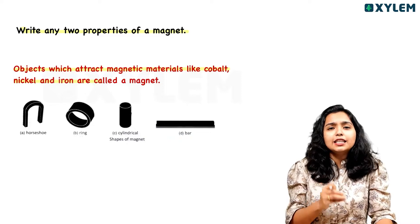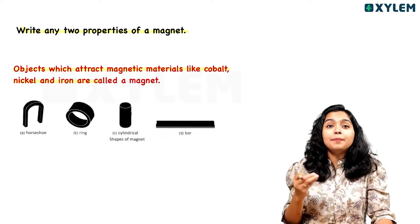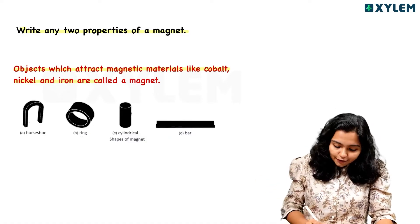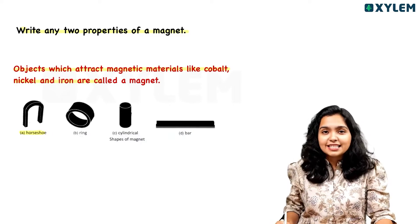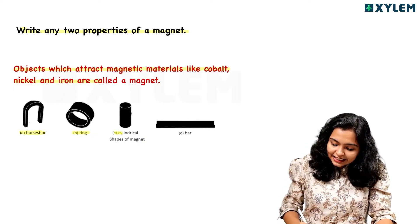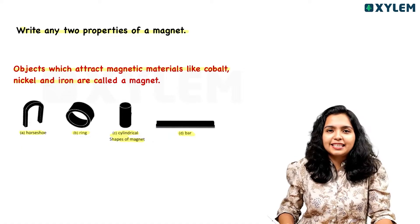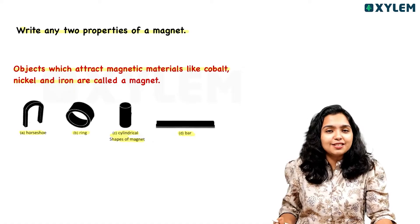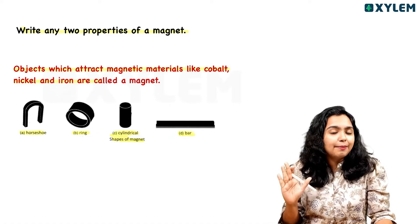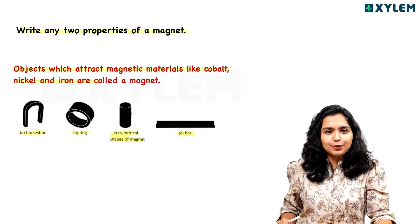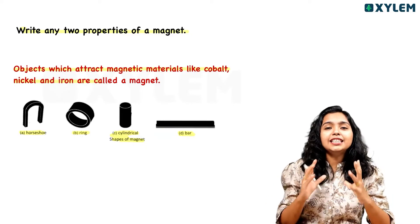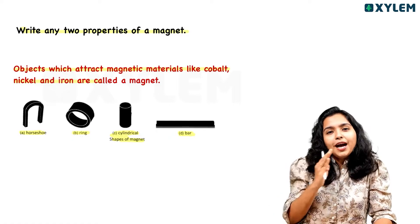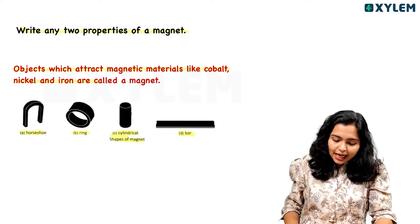We will discuss the shapes of magnets. The shapes include: Horseshoe Magnets, Ring Magnets, Cylindrical Shape Magnets, and Bar Magnets.